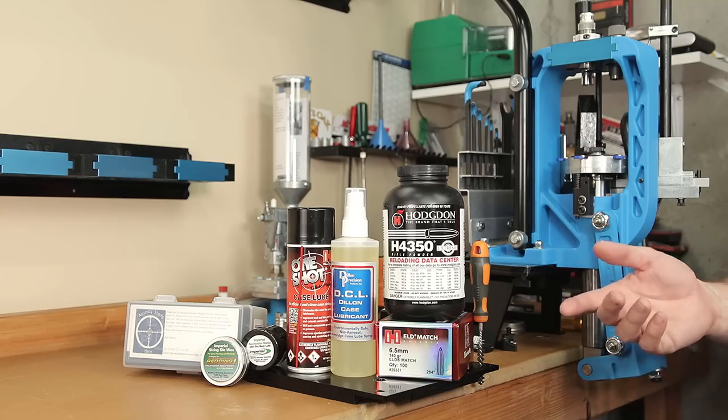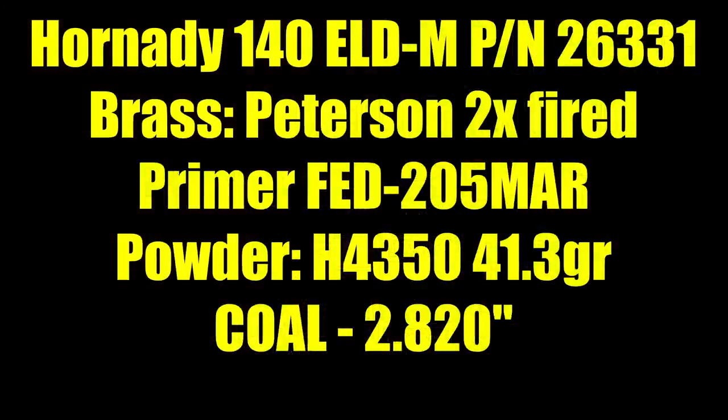So for today's test we're using our good old H4350 by Hodgdon, the 140 grain ELDM by Hornady, Peterson small rifle primer brass, and the good old Federal 205 match primer.